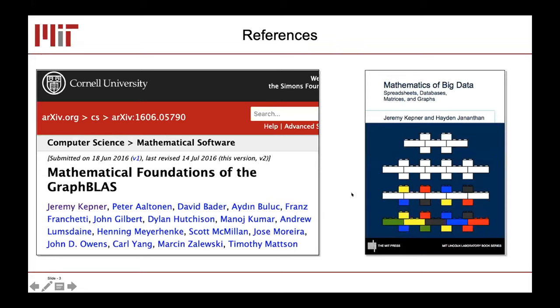Most of this material is drawn from a variety of texts, two of which I'll point out here. One is a paper called Mathematical Foundations of the GraphBLAS. Many of the authors are on the call today, available in arXiv and IEEE proceedings. For those who really want to get into more detail, I have to plug my book from MIT Press, The Mathematics of Big Data, the number one selling math book from MIT Press.